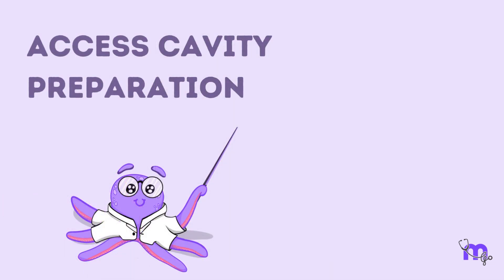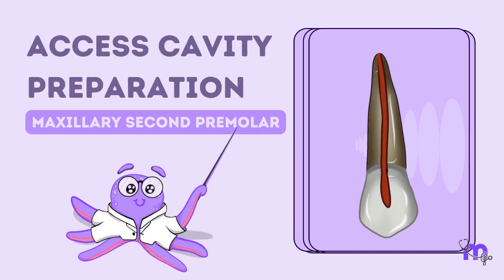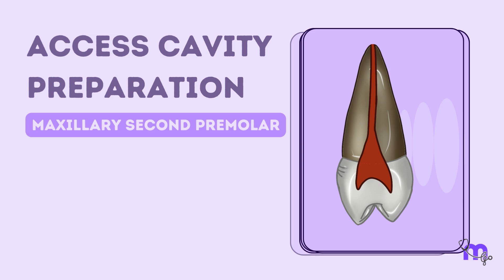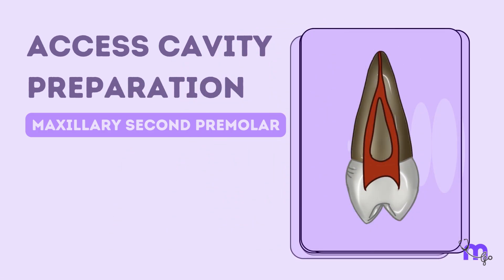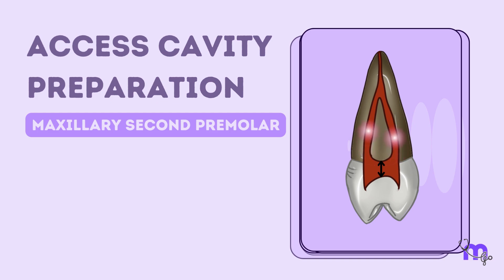Now let's discuss the ACP of the maxillary second premolar. Subtle differences distinguish the maxillary first and second premolars. The second premolar has a wider pulp chamber buccopalatally and a deeper pulp floor when two canals are present. The second premolar may also have a single root. When two canals are seen, they are quite distinct and separate along the entire length of the root, or might converge to form a single canal near the apex.